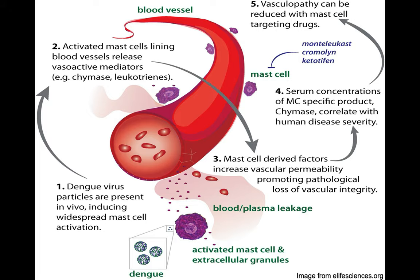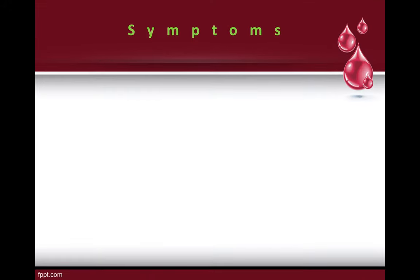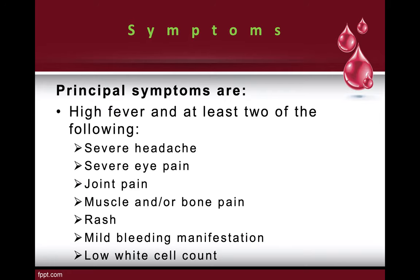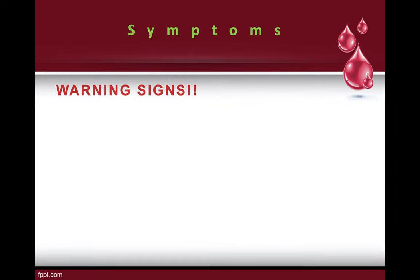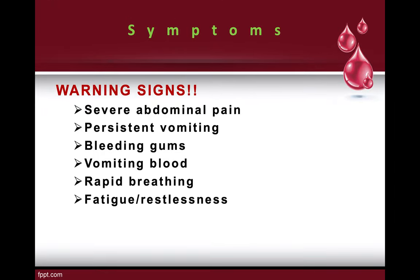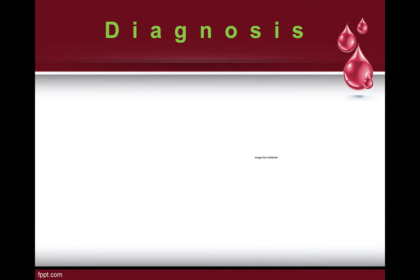Principal symptoms of dengue include high fever and at least two of the following: severe headache, severe eye pain, joint pain, muscle or bone pain, rash, mild bleeding manifestations, and low white blood cell count. Warning signs requiring emergency care include severe abdominal pain, persistent vomiting, bleeding gums, vomiting of blood, rapid breathing, fatigue, and restlessness.